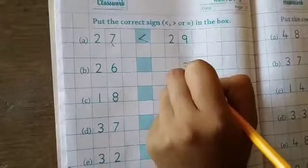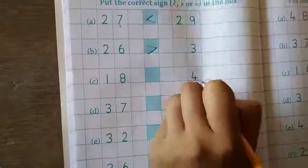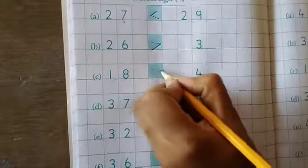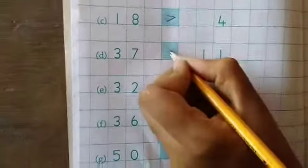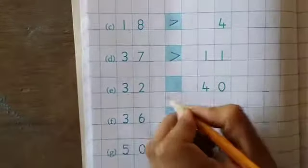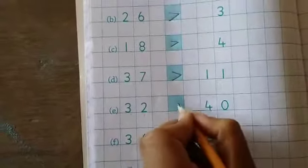26 and 3. 26 is greater. So we use greater than. 18 and 4. 18 is greater. So we use greater than. 37, 11. 37 is greater number. So we take greater than. 32, 40. 32 is smaller than 40. So we use less than.